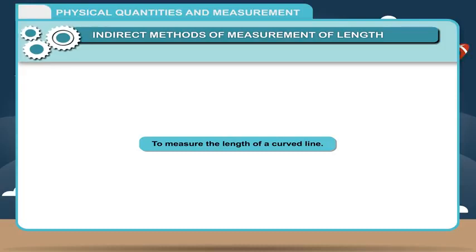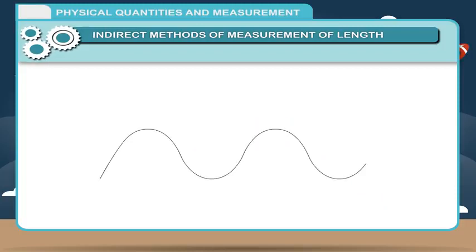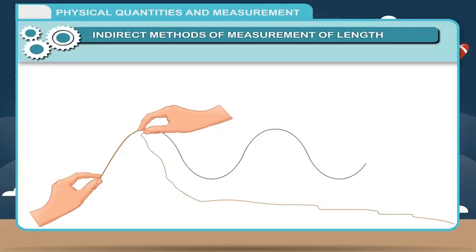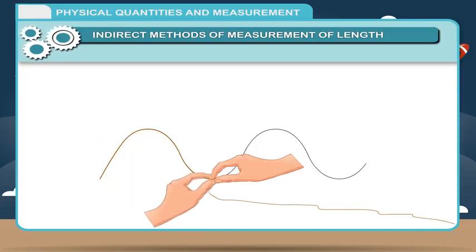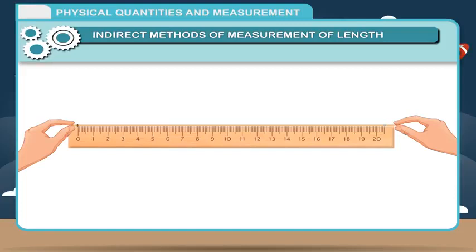Activity — To measure the length of a curved line: Take a thread and tie a knot on one end. Place the knot at one end of the curved line, then move the thread carefully along the length of the curved line, holding it at small distances between your thumb and first finger. Continue until you reach the other end of the curved line. Using a ball pen, put a mark on the thread where it touches the last point on the line. Stretch the thread along a metre scale and measure the length from the knot to the ink mark — this gives the length of the curved line.